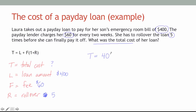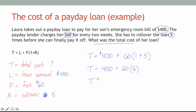The total cost using our formula: T = $400 (the original loan amount) plus $60 times (1 + 5). She paid the $60 fee for the initial term plus five rollovers, so she paid the fee six times total. That's T = 400 + 60 × 6 = 400 + 360 = $760. By the time she paid that loan off, she paid $760 total to cover the emergency and all the rollover fees.